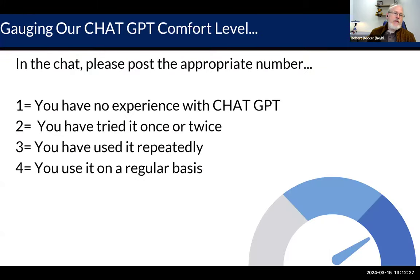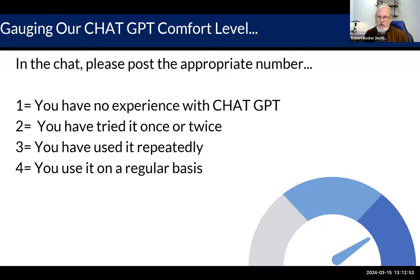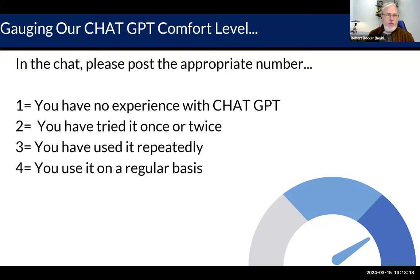Let's get a sense of where we're coming from. In the chat, on a scale of one to four: no experience, tried it once or twice, use it repeatedly, or use it on a regular basis. We're getting a great mix — a lot of threes and fours. On Tuesday, it came out about 50% ones and twos, 50% threes and fours — looks like we're in the same situation here. So a lot of you will get new information, and some will get a different way to look at something you've already seen.